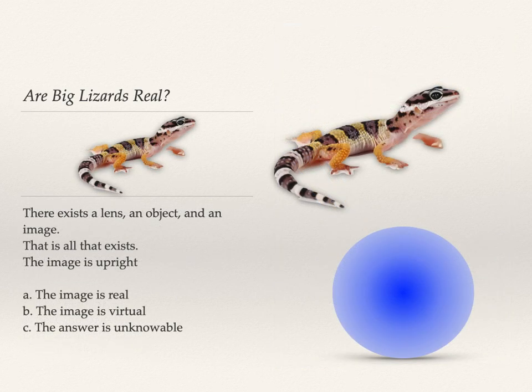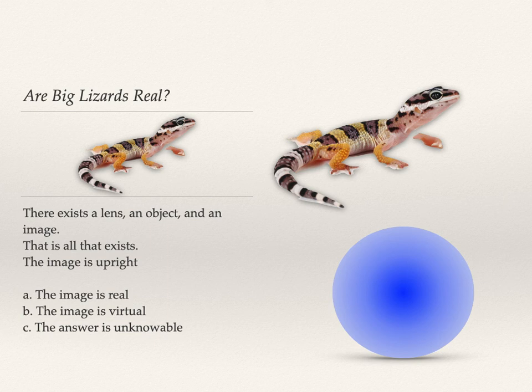Minimalist problem: there's a lens, an object, and an image. The image is upright. Is it real or virtual? We can know: with only one lens, if the image were inverted it would be on the opposite side of the lens from the object, making it real. An upright image is virtual.